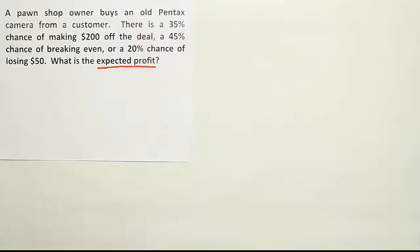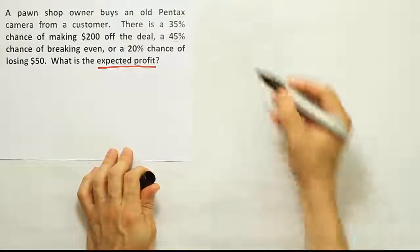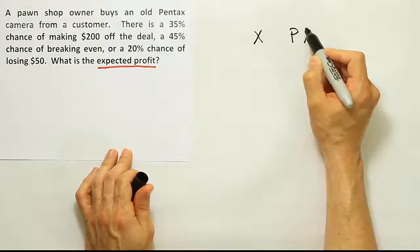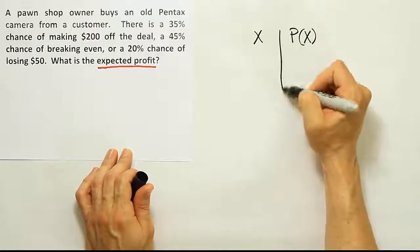So at this point, what I want to do is try to create a table. A table that involves, like before, X value and a probability of X occurring. We always need that in our table.